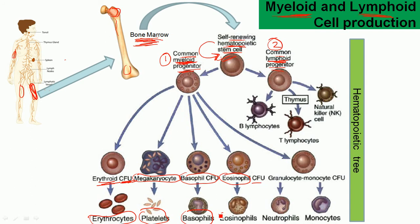The fourth is the eosinophil CFU, which produces eosinophils. The myeloid progenitor cell also produces neutrophils and monocytes depending on the presence of the granulocyte-monocyte colony factor unit. So erythrocytes, platelets, basophils, eosinophils, neutrophils, and monocytes are all produced and matured in the bone marrow before entering the blood.